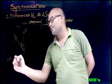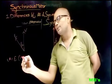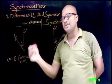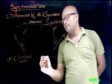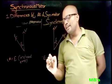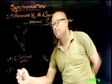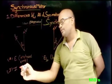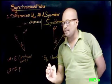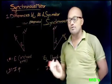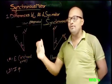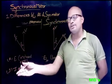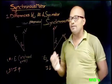The second difference is about E. In the case of the alternator, it is the induced EMF — that is, generated EMF — whereas in the case of the synchronous motor it is the back EMF EB. The third difference is about current I, which is outgoing in the case of the alternator and incoming in the case of the synchronous motor. That is, the alternator delivers current while the synchronous motor receives current.